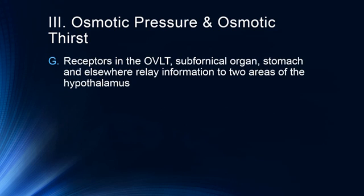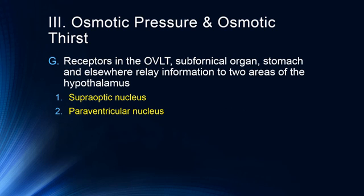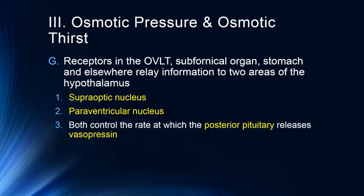The brain detects osmotic pressure from receptors that surround the third ventricle in what is called the OVLT, or the Organum Vasculosum Laminae Terminalis — a helpful mnemonic is that Ovaltine is something you drink, and O is related to osmotic pressure. The subfornical organ is also there in the third ventricle, detecting osmotic pressure and sodium content of the blood. These receptors relay information to two areas of the hypothalamus: the supraoptic nucleus and the paraventricular nucleus. These two areas control the rate at which the posterior pituitary releases vasopressin, which tells blood vessels to constrict and the kidneys to release less water. This is how we end up retaining water when we eat too much salt — vasopressin causes vasoconstriction, raising blood pressure, which is why salt increases blood pressure.